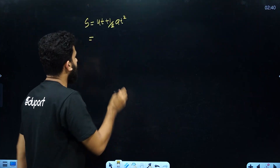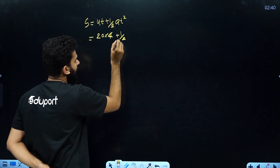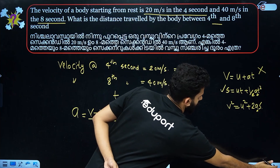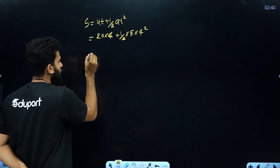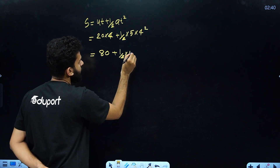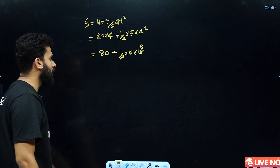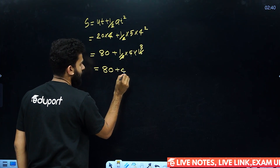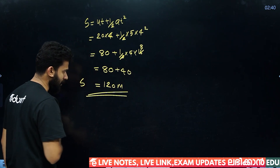s = 20 × 4 + ½ × 5 × 4². That is 20 into 4 is 80, plus half into 5 into 16. 16 divided by 2 is 8, and 5 × 8 is 40. So 80 plus 40 equals 120 meters. The distance is 120 meters.